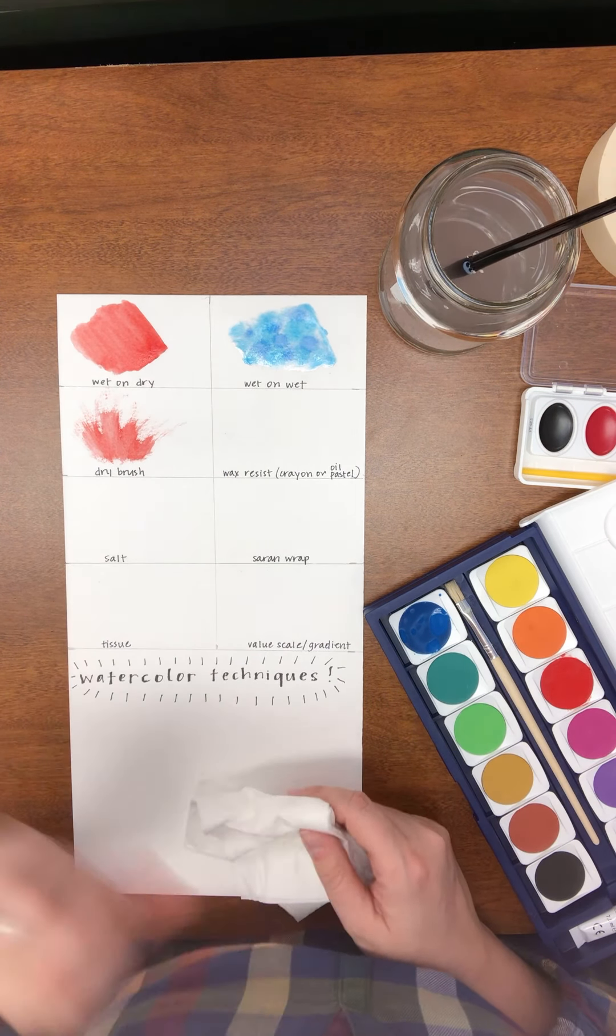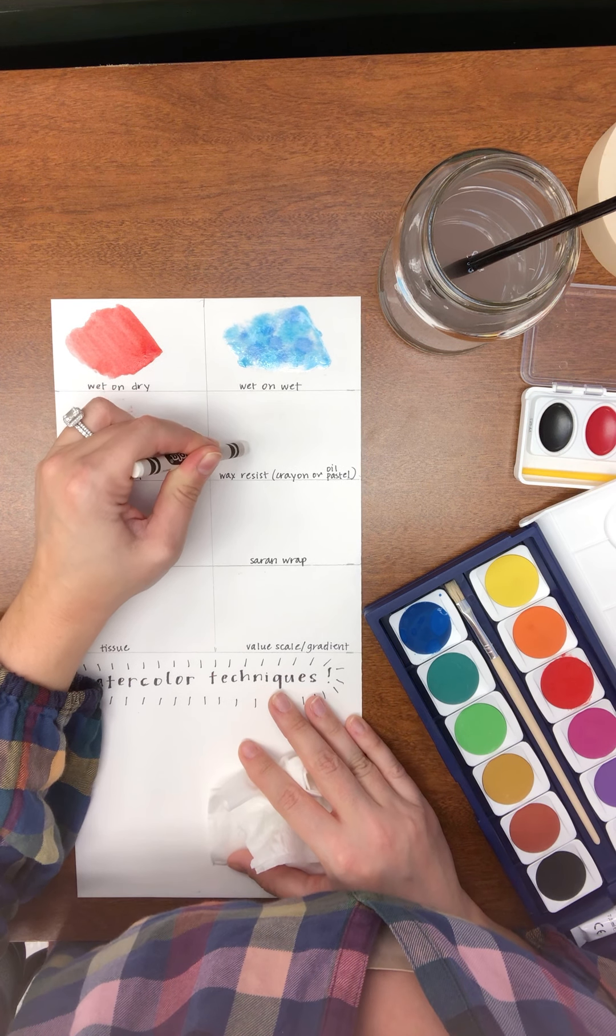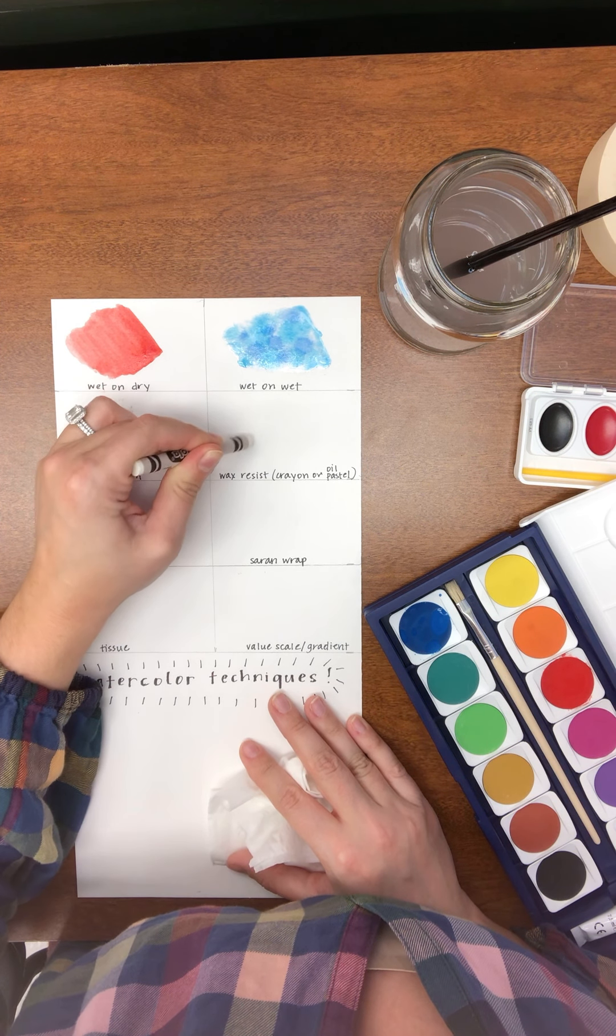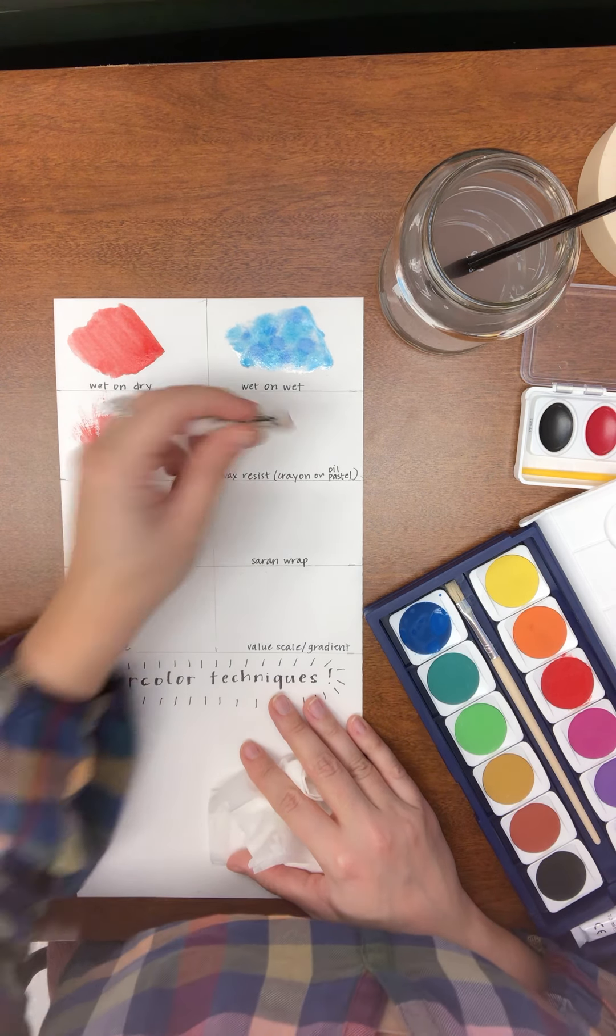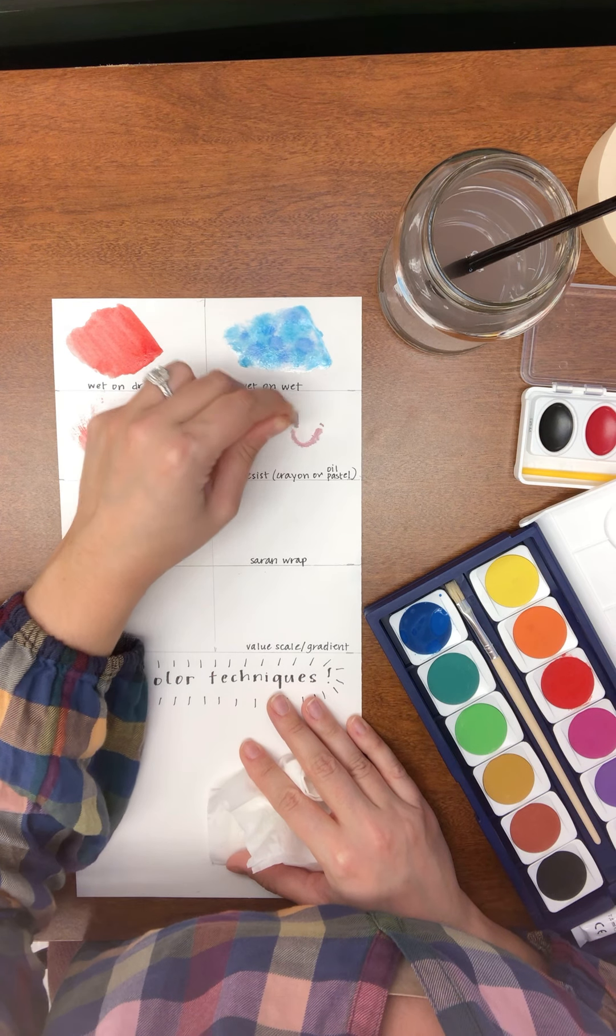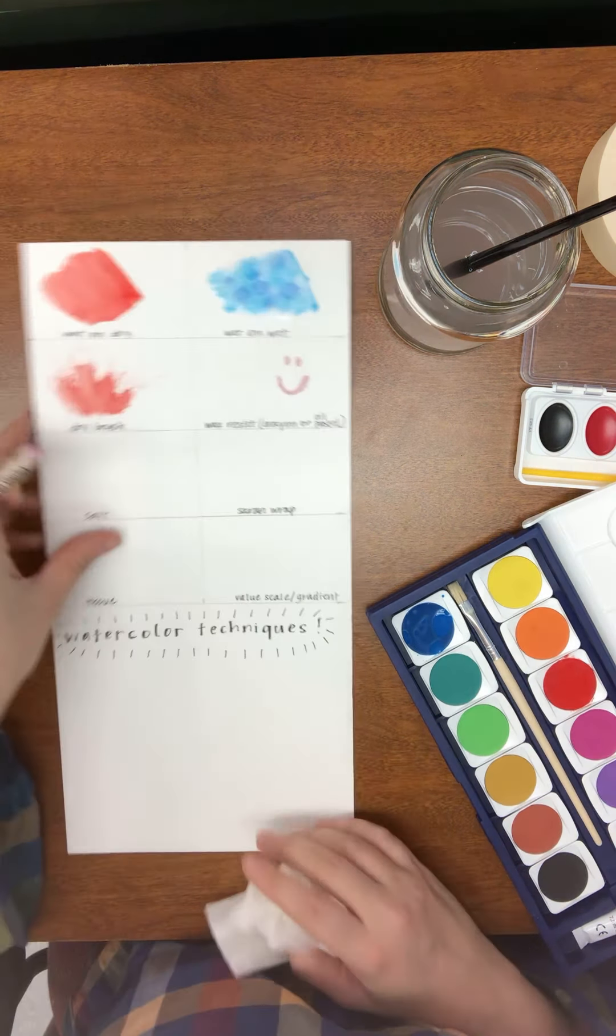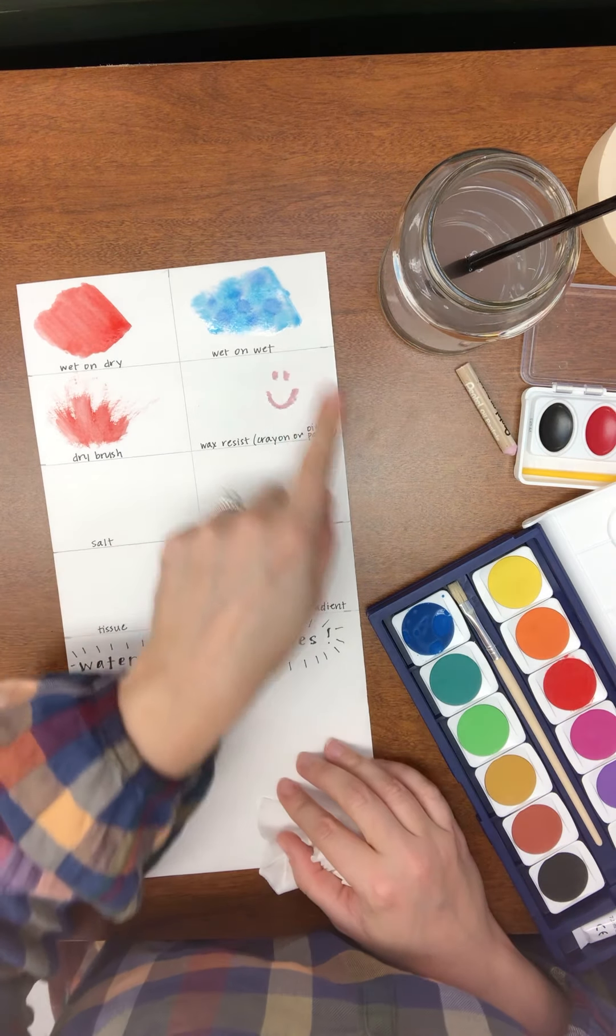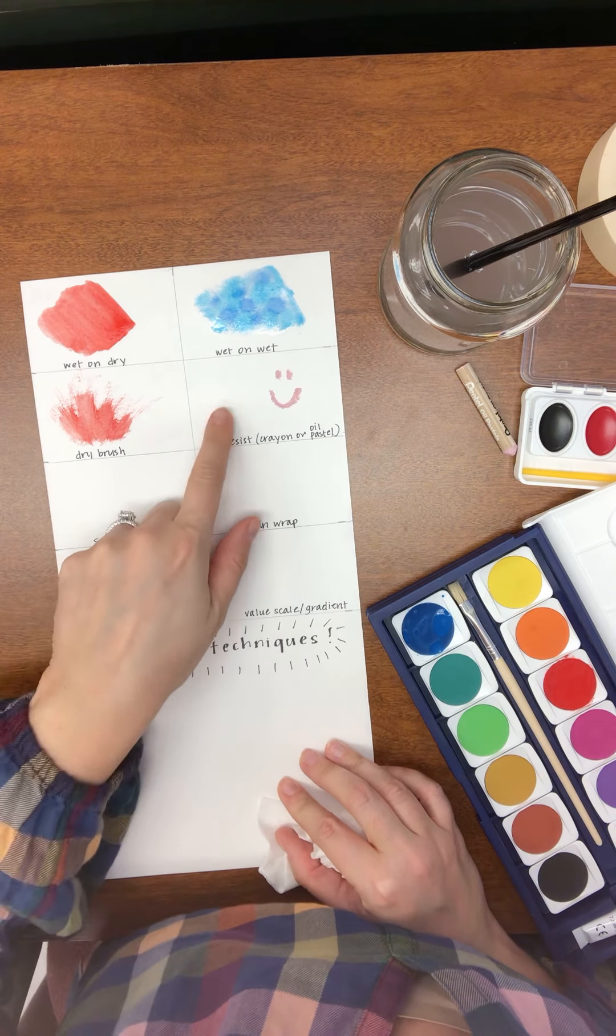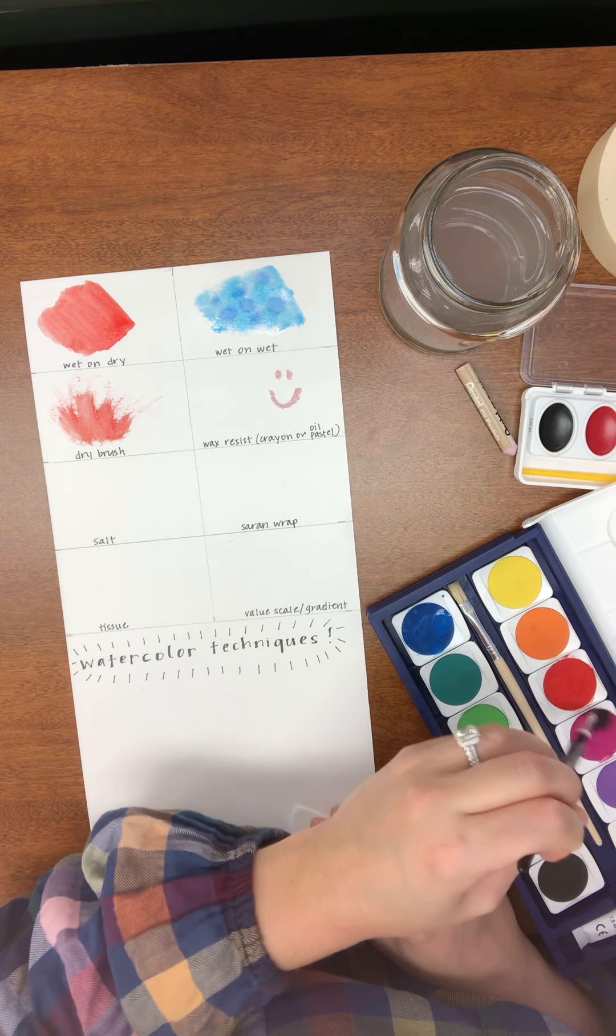So this is where our crayon or oil pastel are going to come in. I am going to draw a heart. I have done that with my white crayon. You can do that with any color. And then on this one I'm going to draw a smiley face. I'm going to get any excess pieces off. So right now you can only see the smiley face. You can't see the heart that I've drawn. But once I go in, I'm going to use some pink for this one.